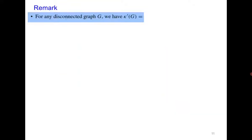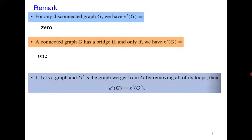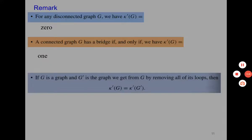A few quick remarks: for any disconnected graph, the edge connectivity is 0. If the graph has a bridge, the edge connectivity is 1. The edge connectivity is the same whether the graph has loops or not. That's all from today's class. In the next class we will introduce the concept of vertex connectivity.